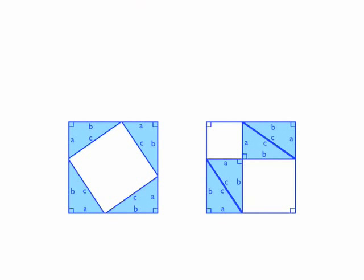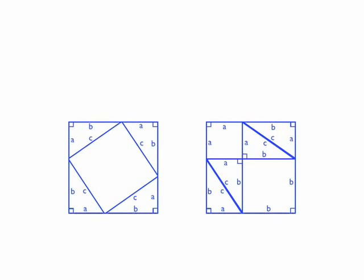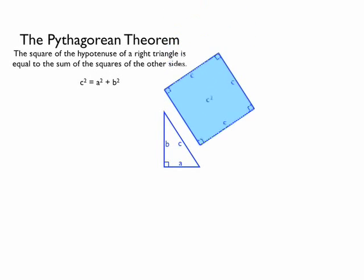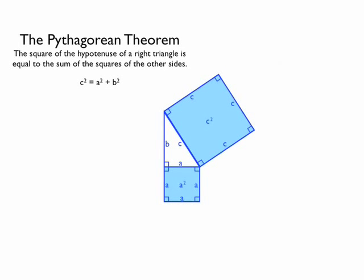So now we have all of our triangles in these two squares. Remember, these two squares are the exact same size, and each side of the square has length a plus b. Also notice that the four right triangles in the first square take up the same amount of space as the four right triangles in the second square, even though they are placed differently in the two squares. So this leaves us to visually realize that c squared equals a squared plus b squared. The Pythagorean Theorem: c squared equals a squared plus b squared.